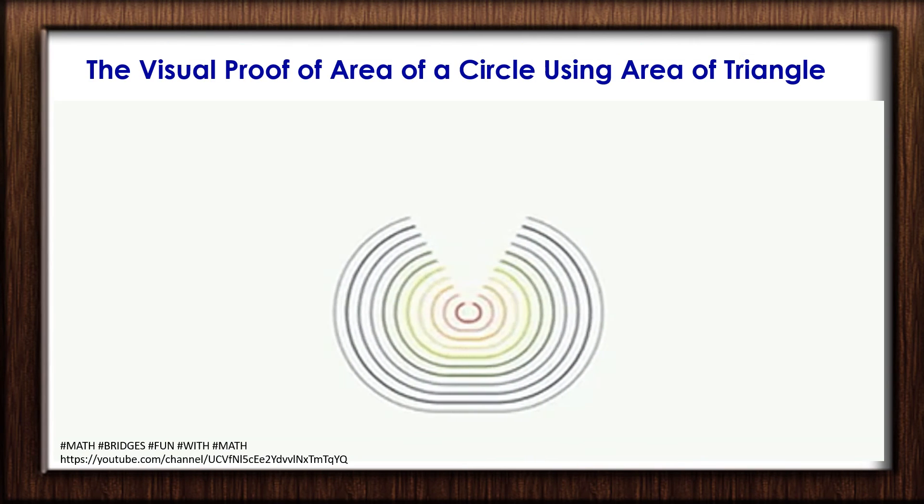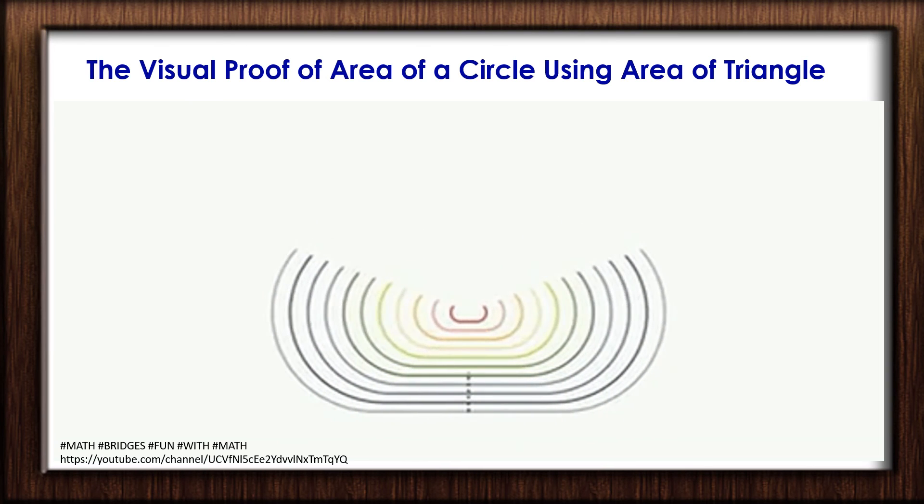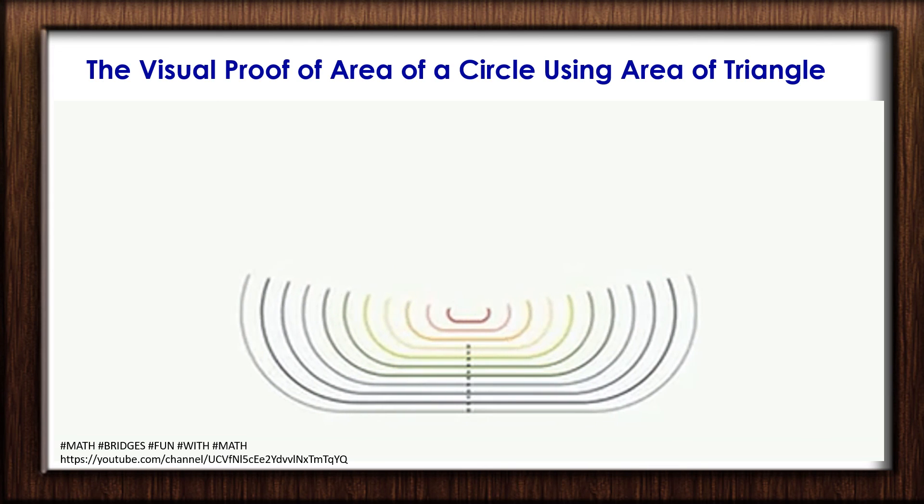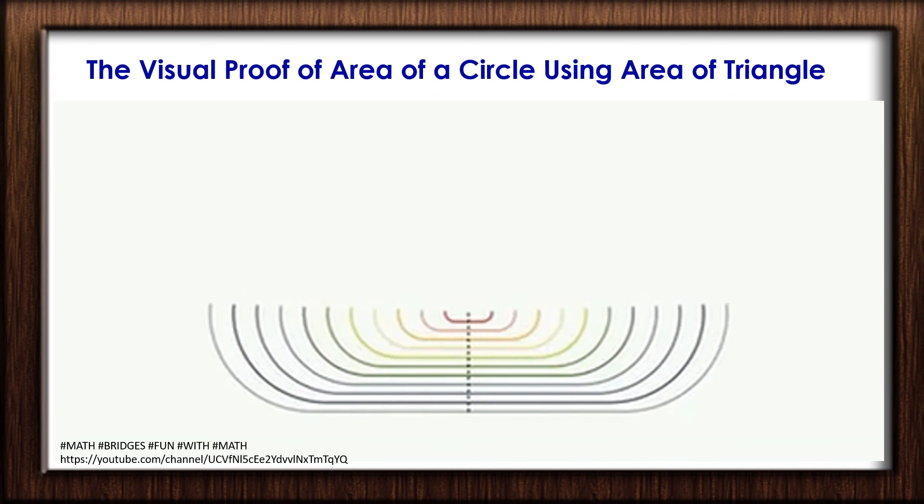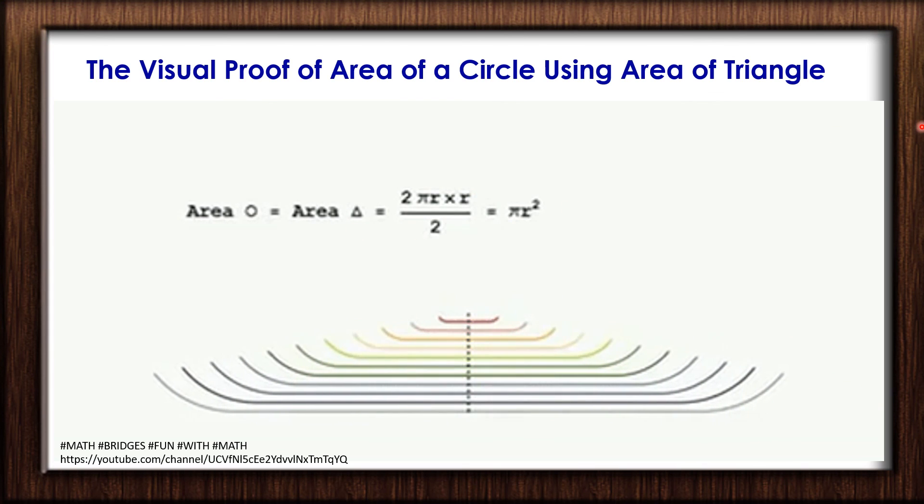You can visualize it once again. This can be taken as an activity using ropes or strips of paper. You can see how we derive the formula area of circle using area of triangle. See how the triangle has been formed when we open the strips. The area of circle is πr².